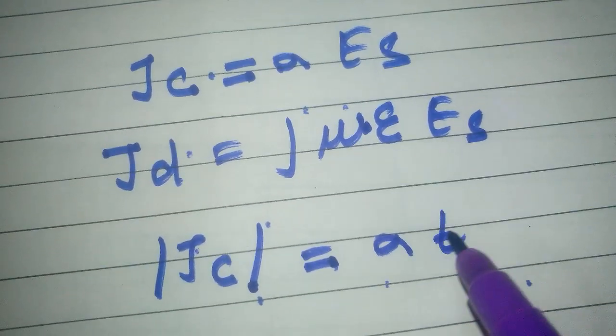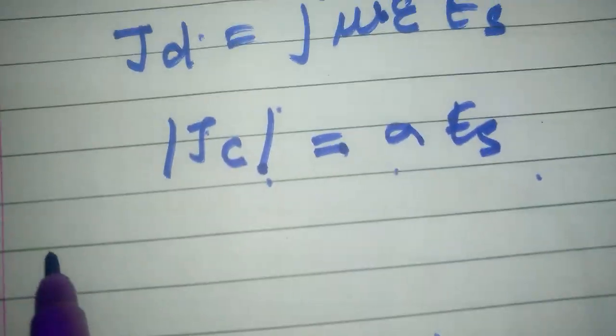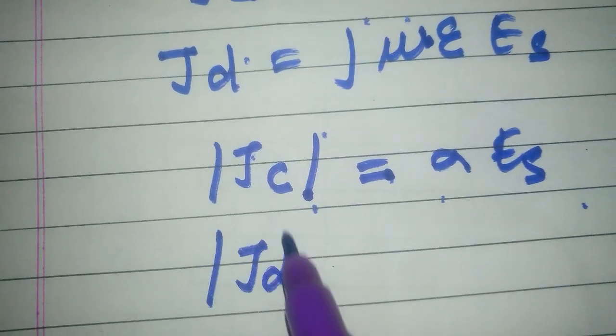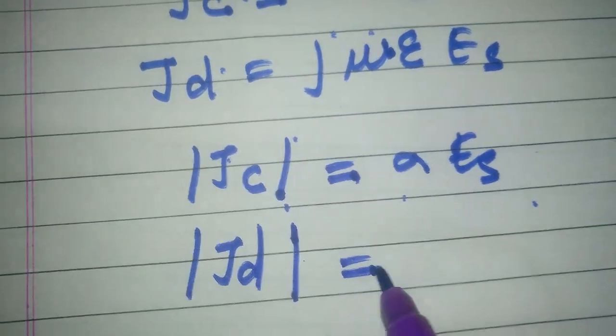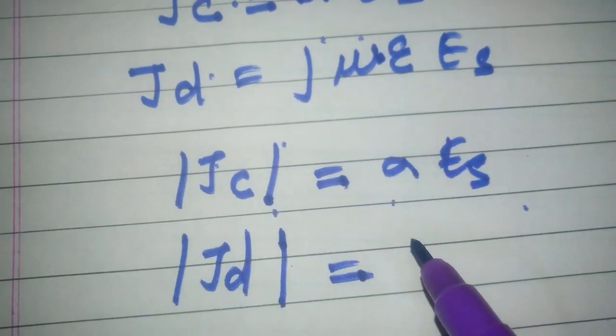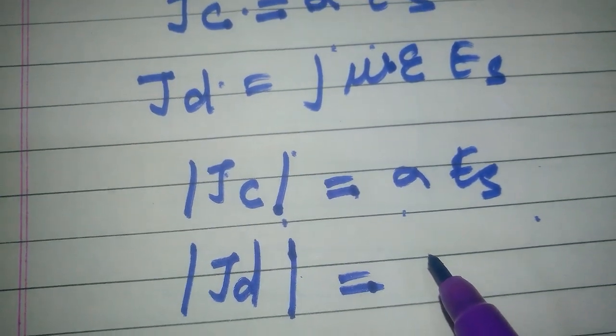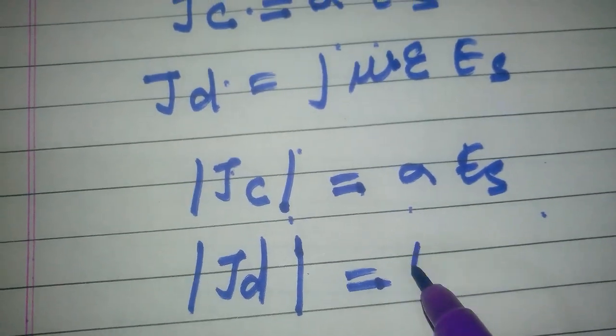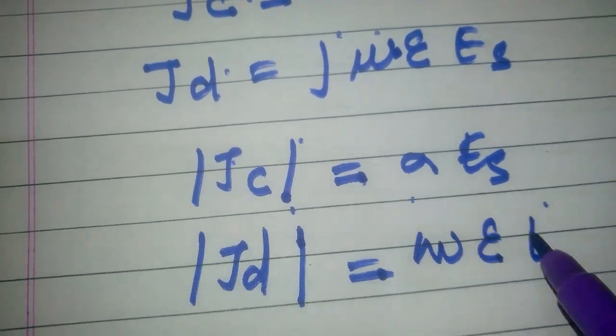On taking modulus of conduction current density, this is the real part. On taking modulus of JD, the displacement current density, the imaginary part of this value will be turned off and we get only the real part, which is omega epsilon Es.